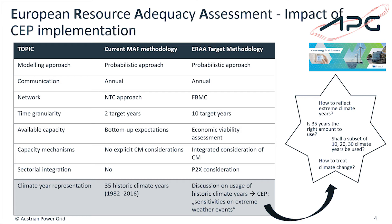Currently we use 35 historic climate years ranging from 1982 till 2016, but the discussion is open as to whether this is sufficient to reflect some extreme weather events of the future. Next to that, the question of whether 35 years is the right amount to be used, or a subset of 10, 20, or 30 climate years shall be used, and also how to reflect climate change.